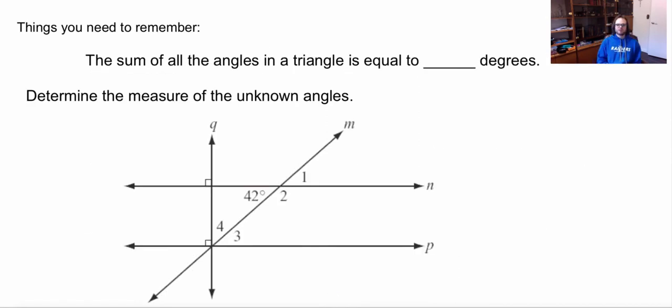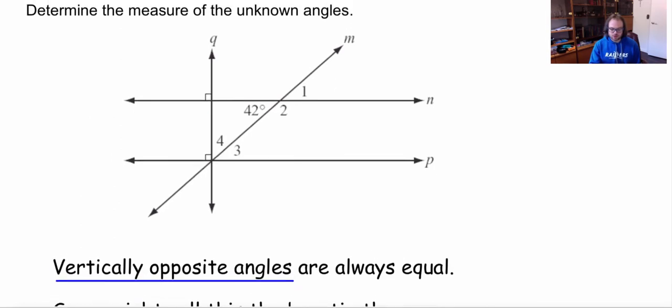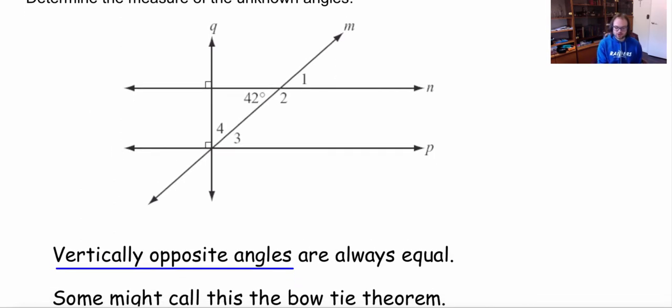So here are some properties that we need to remember. The sum of all angles in a triangle is equal to 180 degrees. Now to determine the measure of these angles here we're going to always look at vertically opposite angles which are always equal. So if I look at this 42, 42 is going to be equal to this here so this number one must be 42.